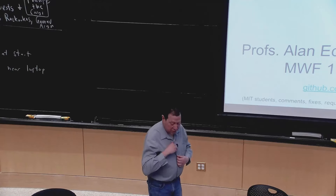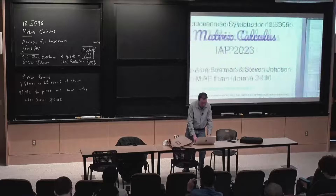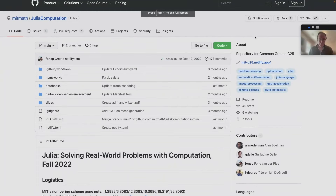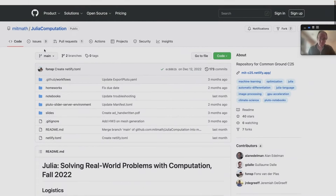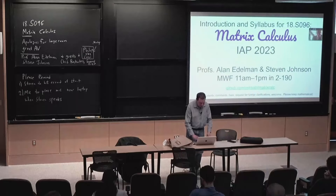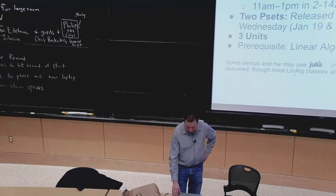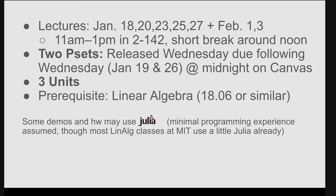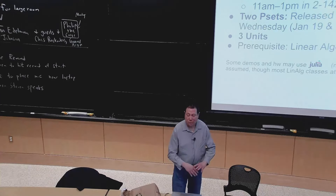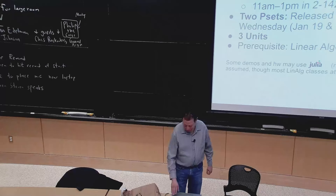Let me quickly show everybody the GitHub site that we're going to be using. Here are the lectures, the problem sets, three units. We assume people are familiar with linear algebra and not much more. There's no assumption that you've already used Julia before, but if you've taken 1806 with Professor Johnson or some other courses, you may already be somewhat familiar. The kind of Julia we're using here is basic calculator Julia, so you won't need to know much.